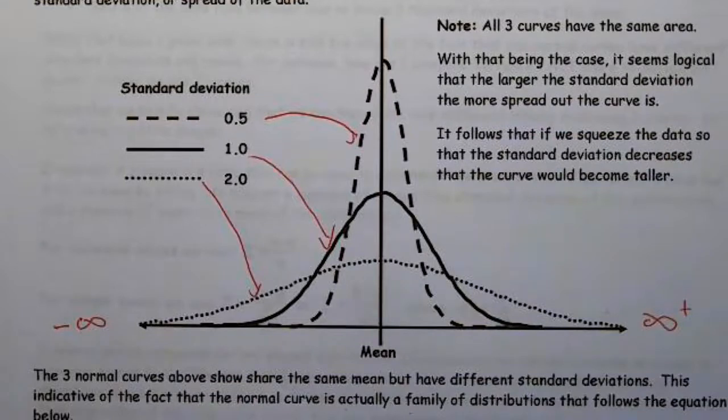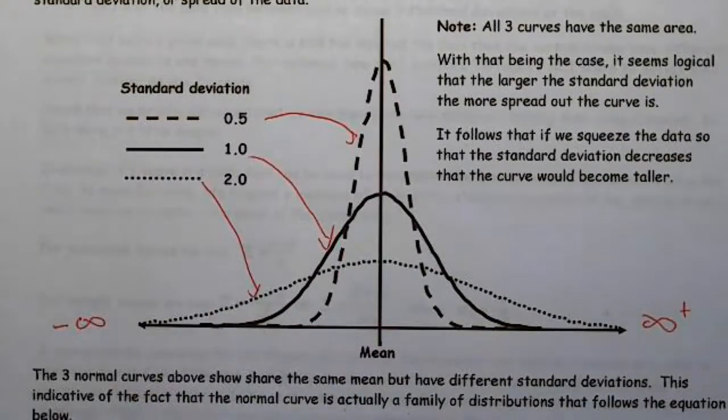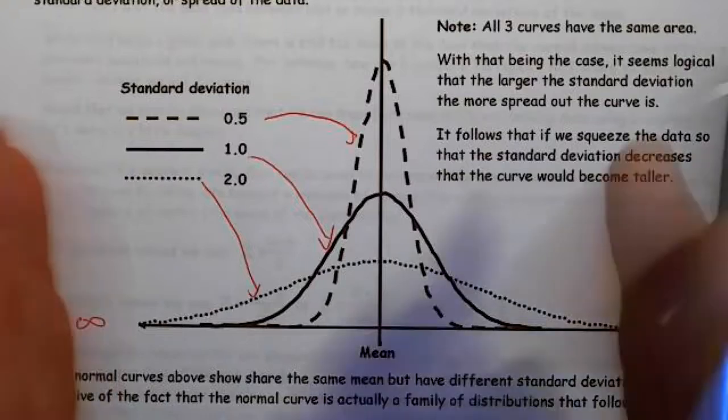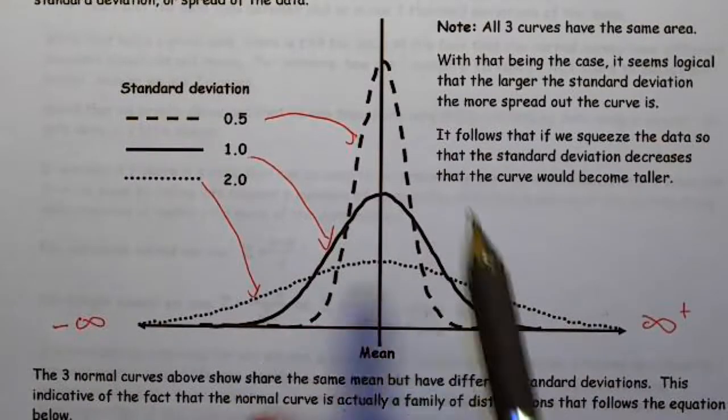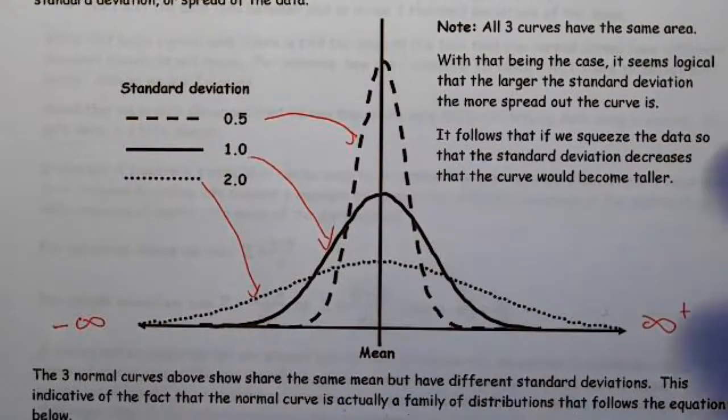And you'll notice that the heights change because the smaller the standard deviation, the more data we have towards the center. The larger the standard deviation, the more spread out we are. So in other words, if you take a curve and you squish it together, you're going to have a small standard deviation. If you spread it apart, you're going to have a large standard deviation.